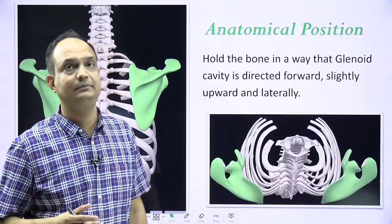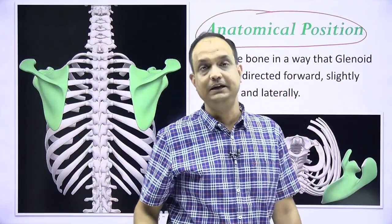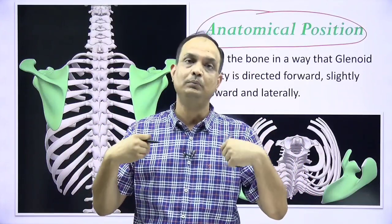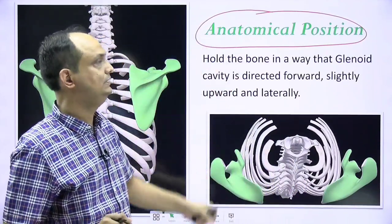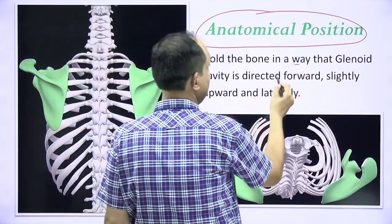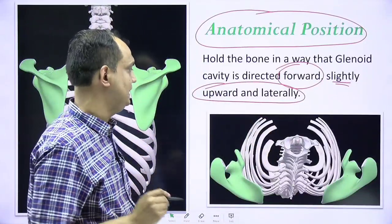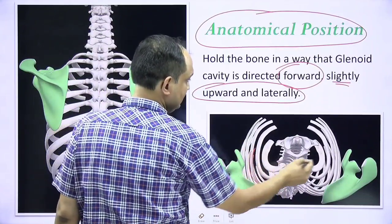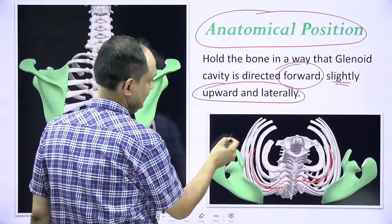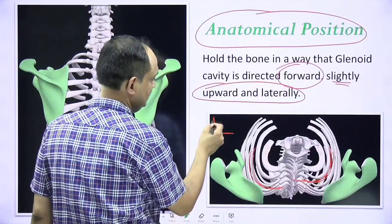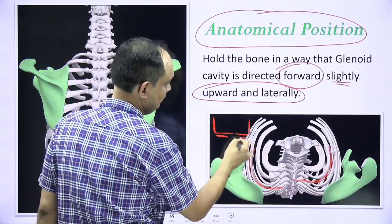Once you are sure about the side determination, the second thing is anatomical position — how the bone lies in our own body. Once you know the side, you have to hold the bone so that the glenoid cavity is directed forward and slightly upward and laterally. Our ribs have a curvature, so the scapula follows the outer curvature of the rib. If the ribs were not curved, the scapula would come exactly on the posterior side of the rib cage.